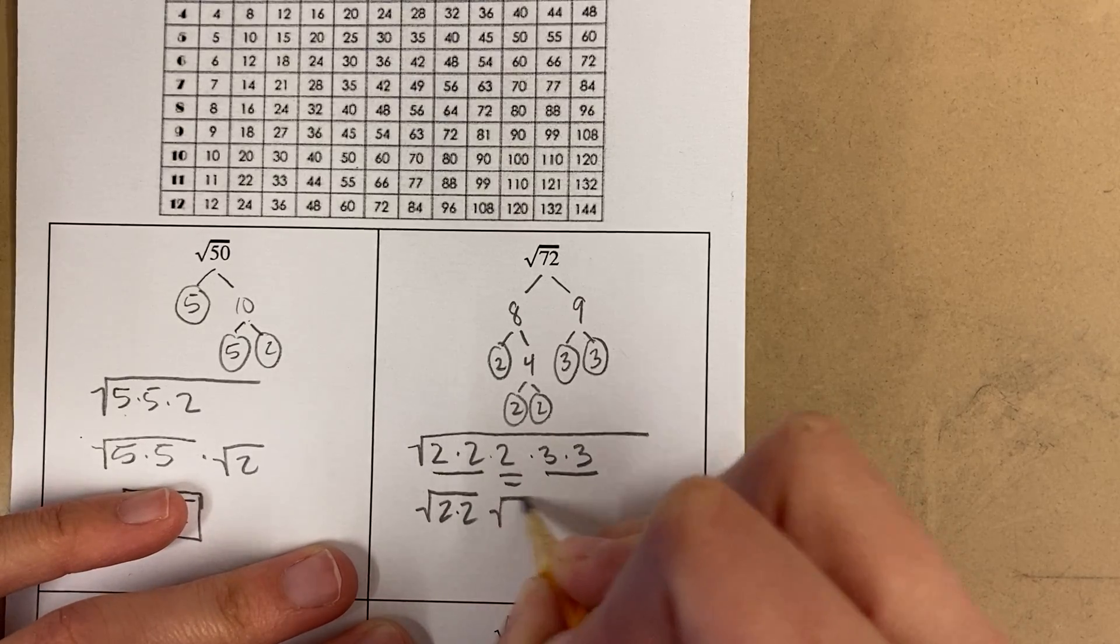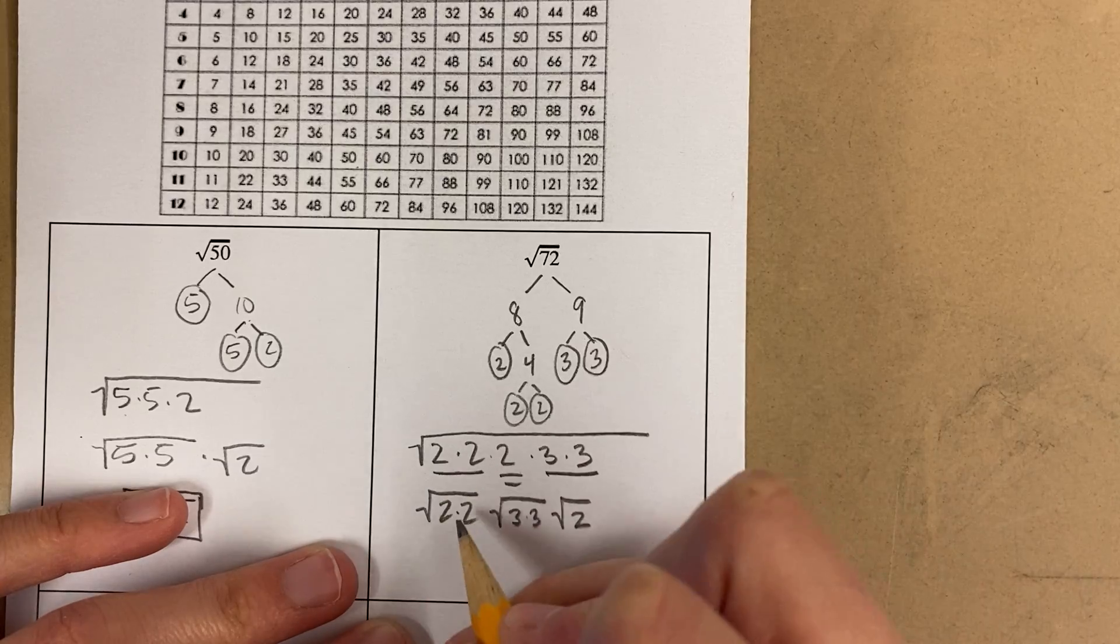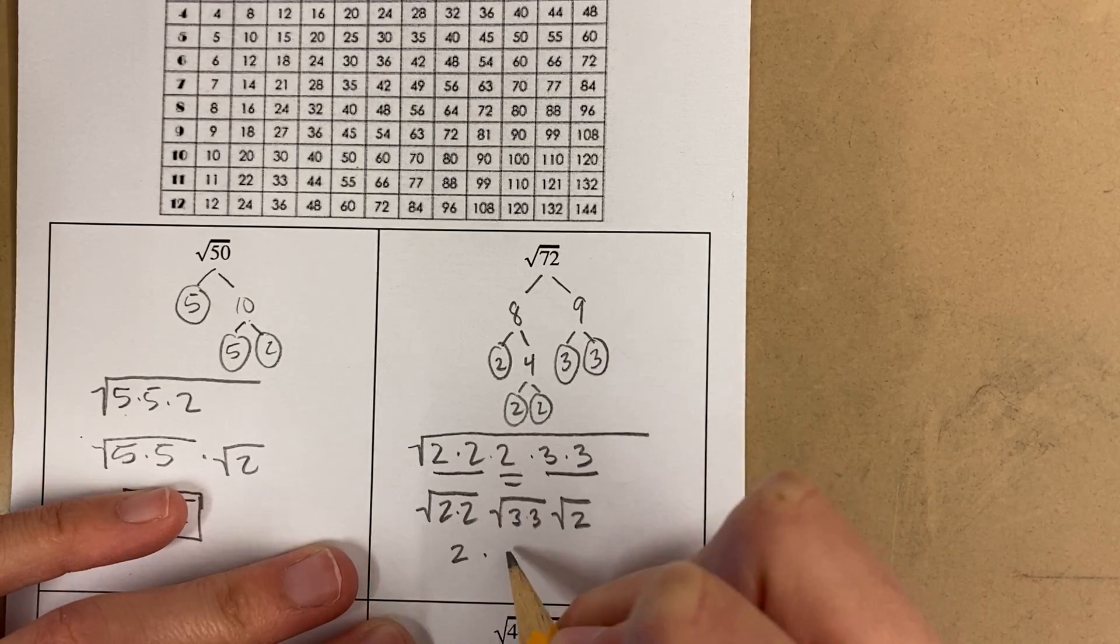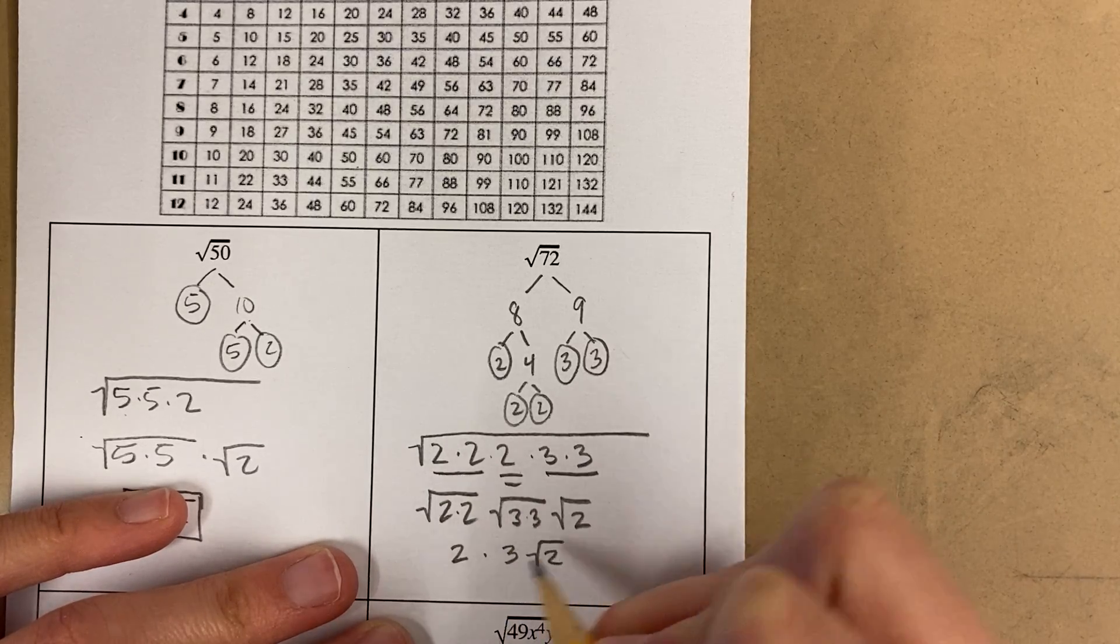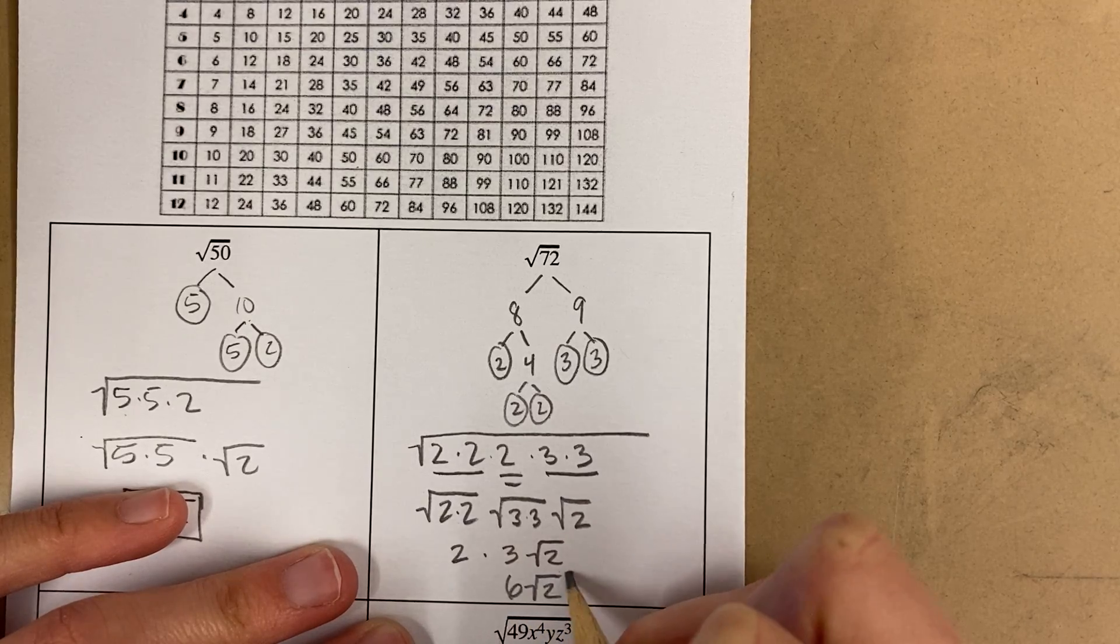I have a double 2, a double 3, and a single 2. This becomes a 2, this becomes a 3, and this is root 2. 2 times 3 is 6 root 2.